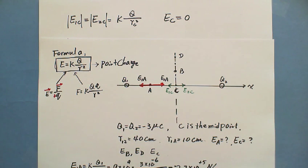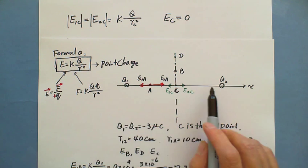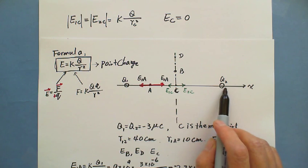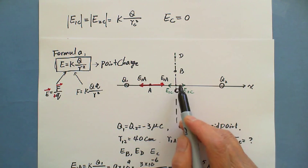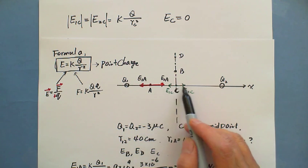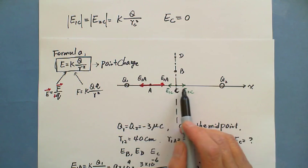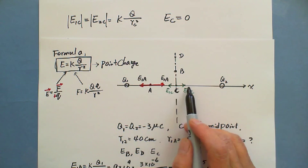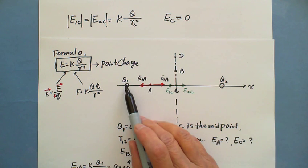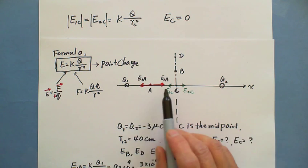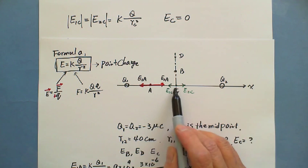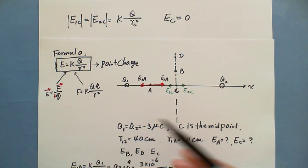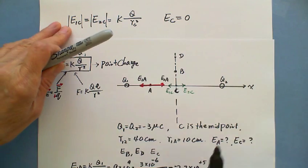As long as the two charges are the same and both negative, at the midpoint the electric field contributions from both charges cancel out each other and the net field is zero.